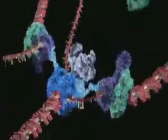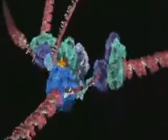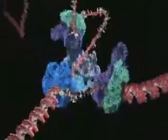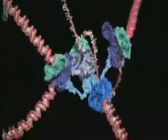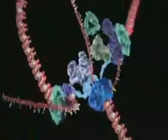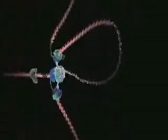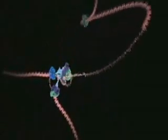One strand is copied continuously and can be seen spooling off to the right. Things are not so simple for the other strand because it must be copied backwards. It is drawn out repeatedly in loops and copied one section at a time.